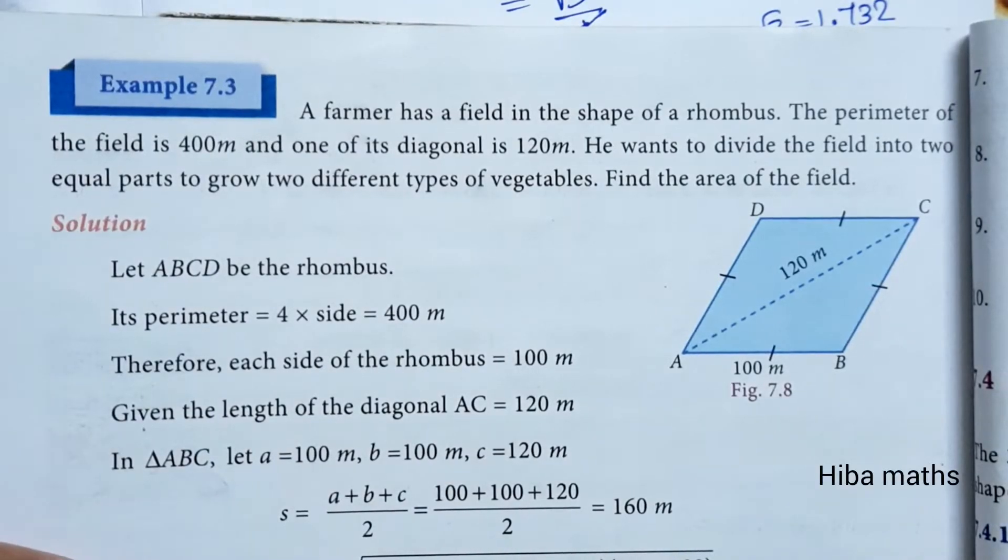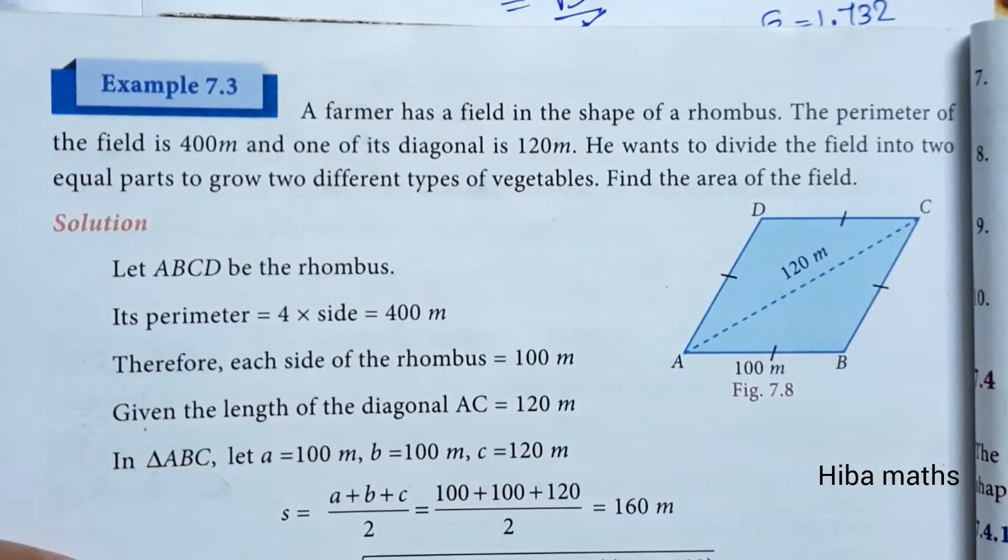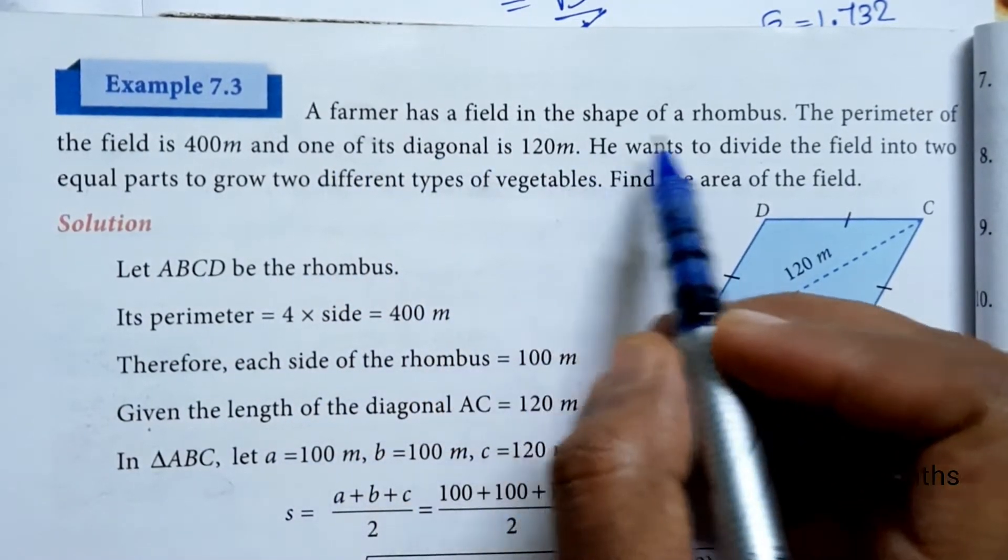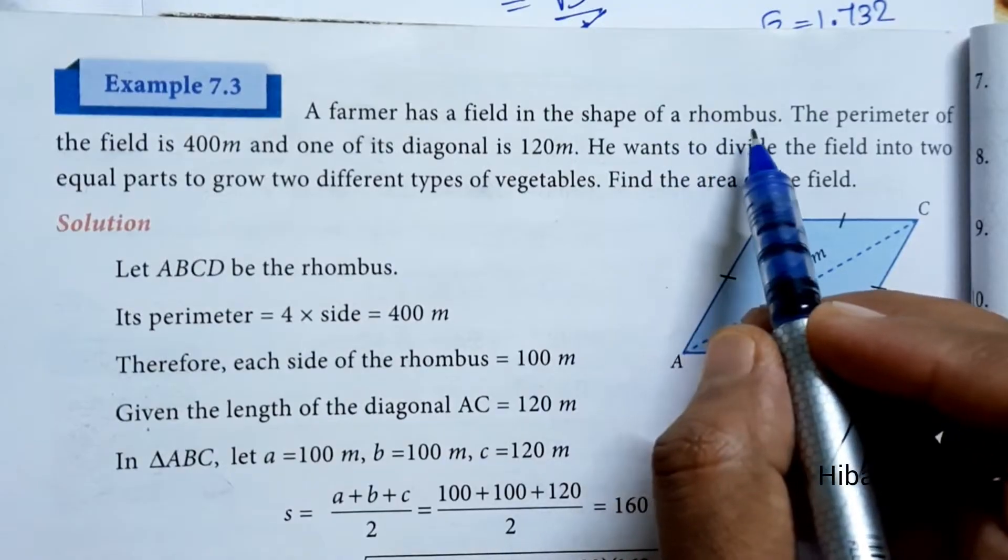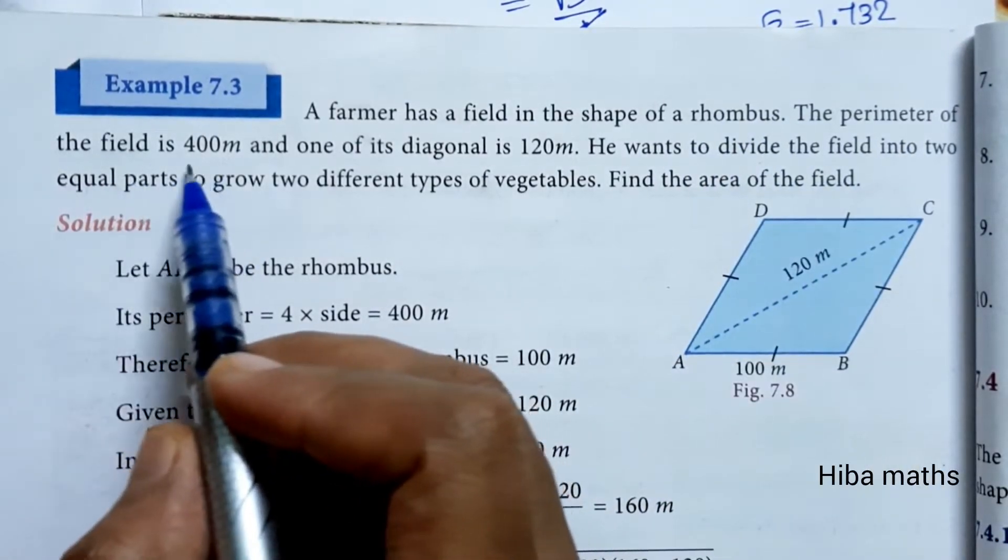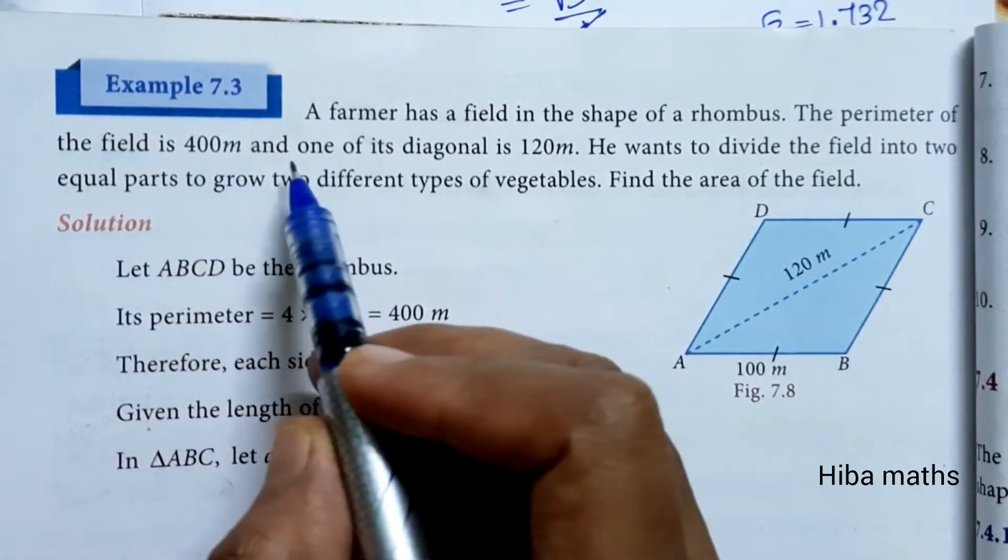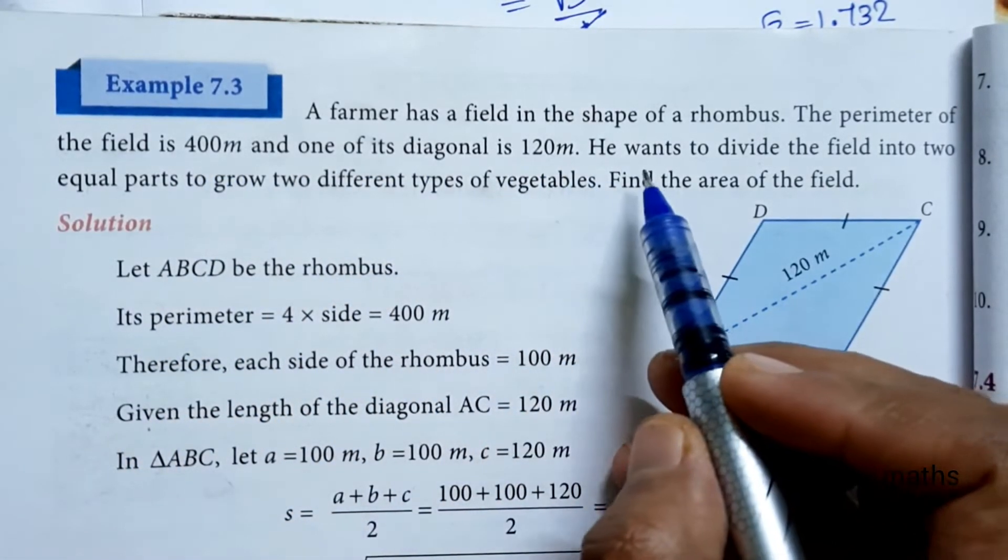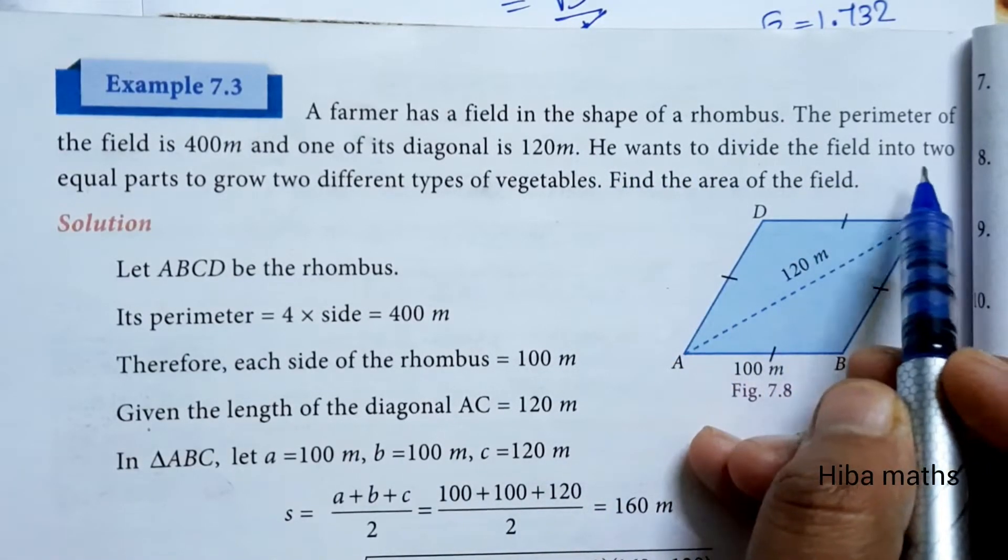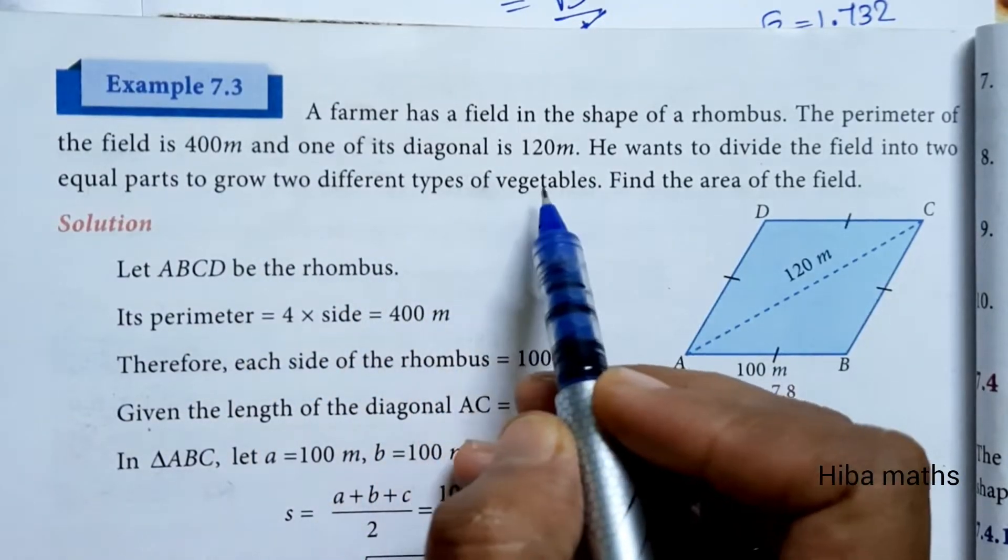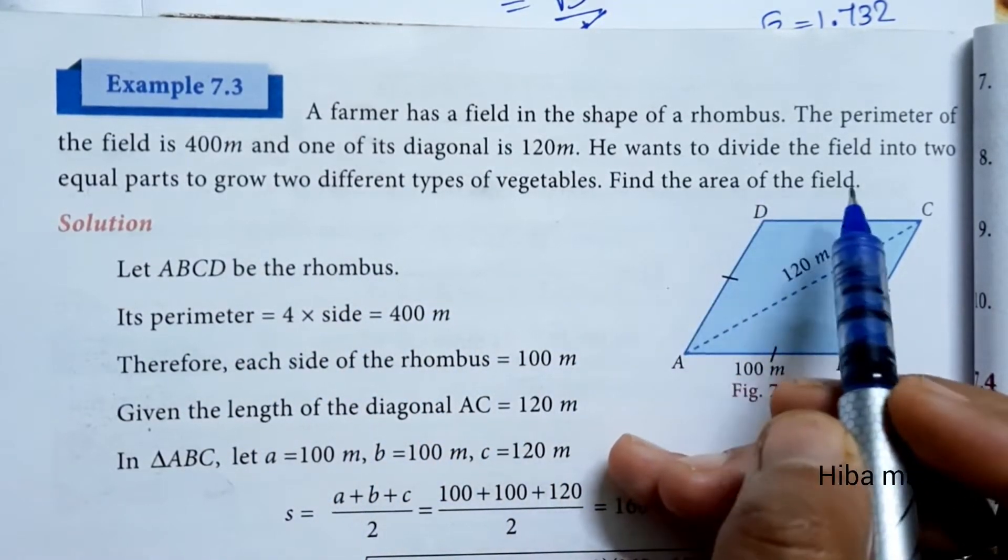Hello students, welcome to Hibamax 9th Standard Math Chapter 7 Example 7.3. A farmer has a field in the shape of a rhombus. A rhombus has all sides equal. The perimeter of the field is 400 meters and one of its diagonals is 120 meters. He wants to divide the field into two equal parts to grow two different types of vegetables. Find the area of the field.